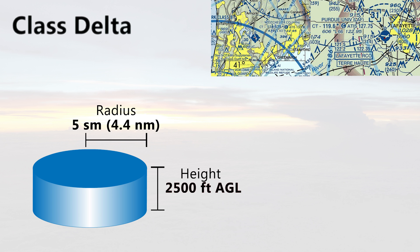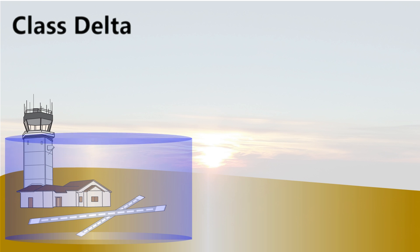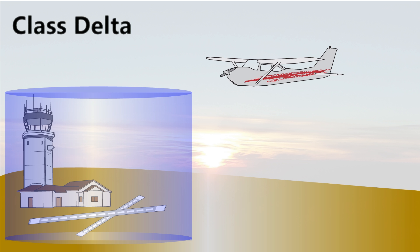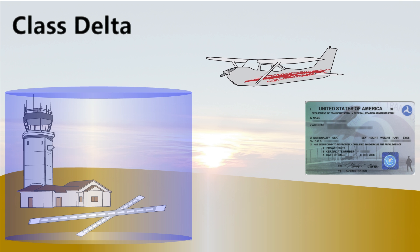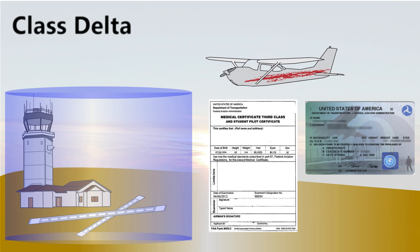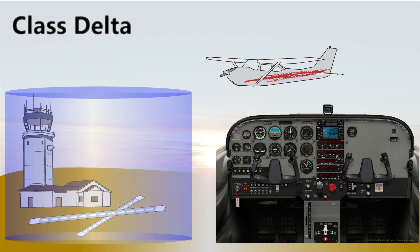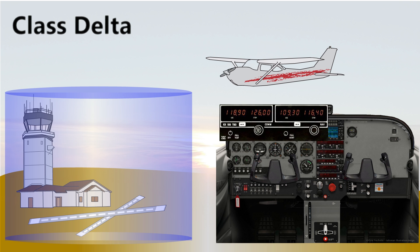Now that we understand the basic size, shape, and layout of Class D, let's see what needs to be done before we can enter. Before entering or operating within a Class D airspace, there are a few pilot, aircraft, and communication requirements. Since Class D airspace is smaller than other controlled airspace surrounding airports with an operating control tower, the requirements are also smaller. Unlike some airspace, to enter Class D, no specific pilot certification is required. Any pilot, including a new student pilot, may operate within Class D. In regards to equipment, unless otherwise authorized by ATC, the aircraft must have an operable two-way radio.